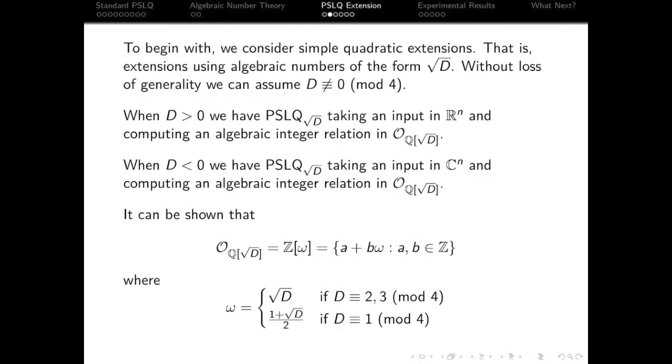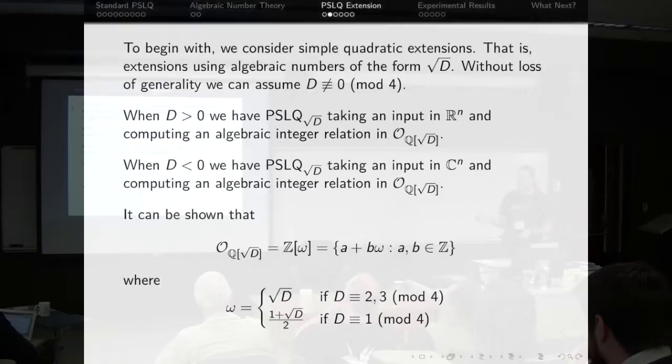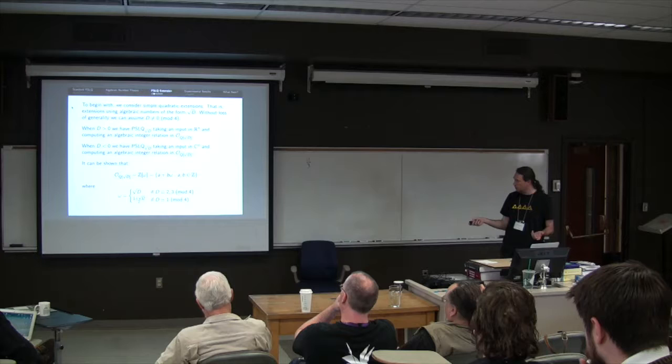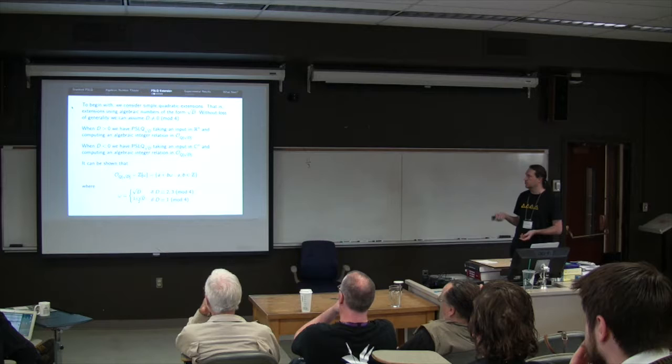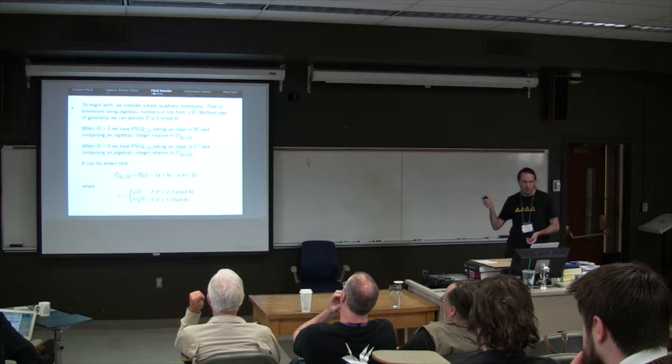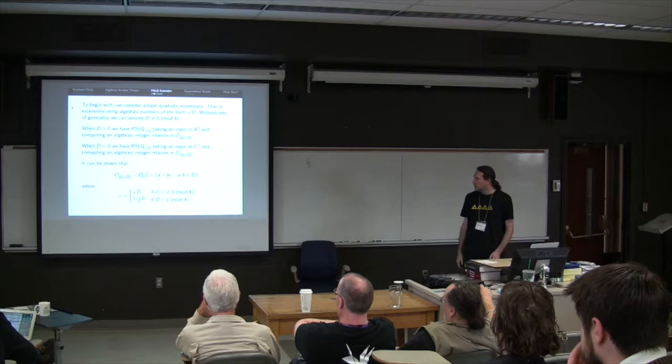We can assume, without loss of generality, that D is not congruent zero and not four, because if it is, we can just factor the powers of four out, we've got one of the other three cases. We could probably even assume, without loss of generality, that D is square free, but it doesn't seem to change much whether we do or don't. So if we set D greater than zero, PSLQ root D takes an input in the reals and gives us an output in the integers of Q adjoin root D. When D is less than zero, we take complex input and output in the appropriate integers.